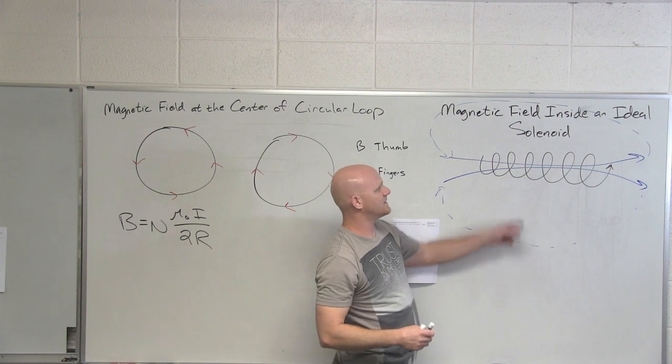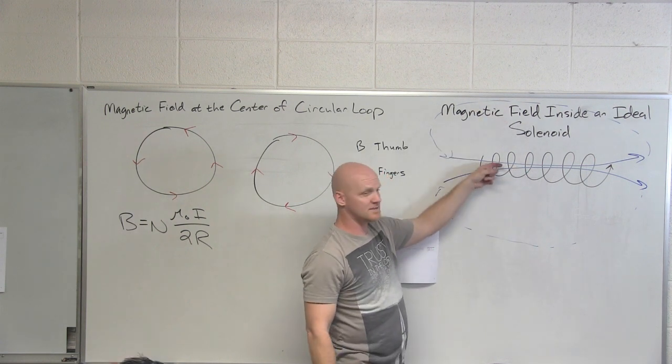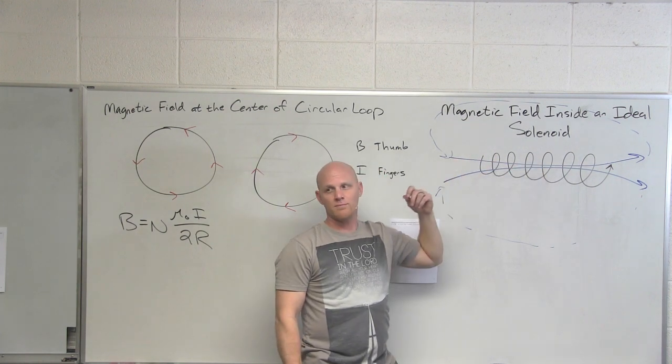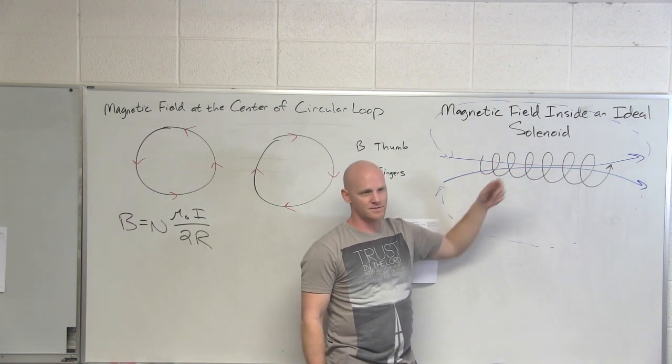The magnetic field is fairly weak outside the coils, but inside it can get pretty darn strong. Another place you might see one of these is an electromagnet - really strong magnetic field in there.